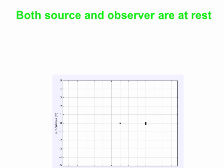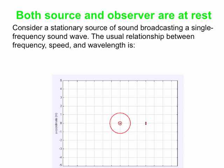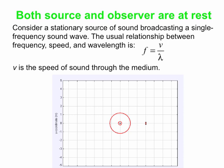We're going to start by having everything at rest, establishing a basis to start from. We have a stationary source of sound broadcasting a single frequency wave. In this case, the usual relationship between frequency, speed, and wavelength holds: the frequency is the wave speed divided by the wavelength. V here is the speed of sound in the medium, which is set by the medium itself.